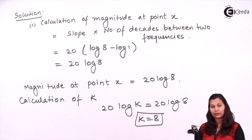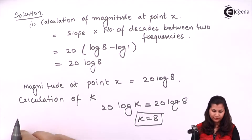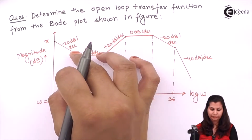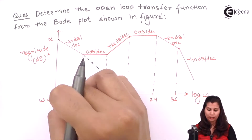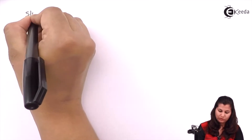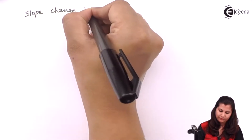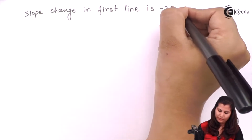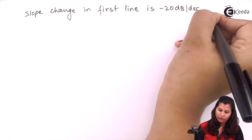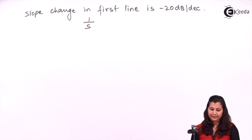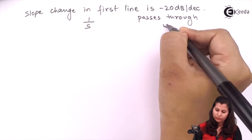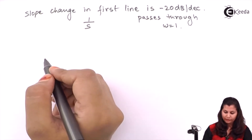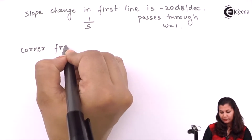Next, the first line has a slope of minus 20 dB per decade, so this will be an integral factor because it crosses omega equals 1. The slope change in the first line is minus 20 dB per decade, so this gives an integral factor 1/s, since it passes through omega equals 1.